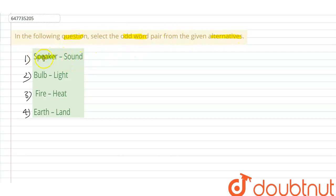So guys, here I have 4 options. There will be 3 options following some logic and the 4th option will be different. So we have to find out that different one.